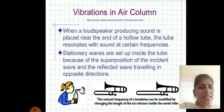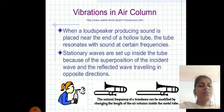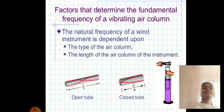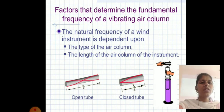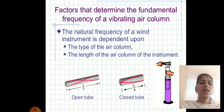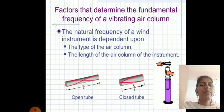Factors that determine the fundamental frequency of a vibrating air column: the type of air column, the length of the air column, and whether the tube is open or closed. For an open tube the minimum length is λ/2; for a closed tube it is λ/4.